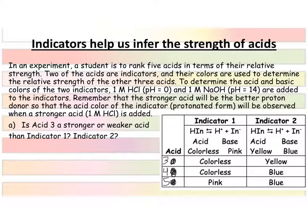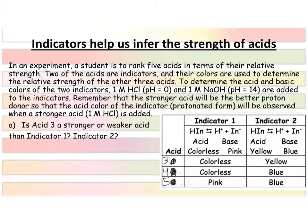Continuing on that theme, we're going to look at two indicators — indicator one and indicator two — and use them to determine the relative strength of three acids. Note that the acids have been renumbered as acids three, four, and five. Acids one and two are actually our indicators, and then we have acid three, four, and five.